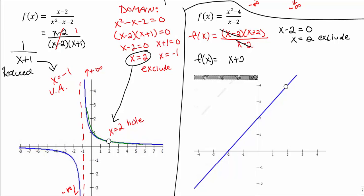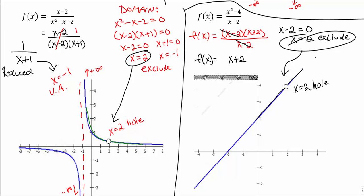After canceling, the denominator is completely gone — no variables remain in the denominator. Since there's no denominator left, there are no vertical asymptotes for this problem, because no problem x values remain. The only excluded value was x = 2, and it disappeared when we factored and canceled. So that exclusion manifests as a hole. The graph goes up to the hole, has a little skip, and then continues on its way — barely any disruption at all.